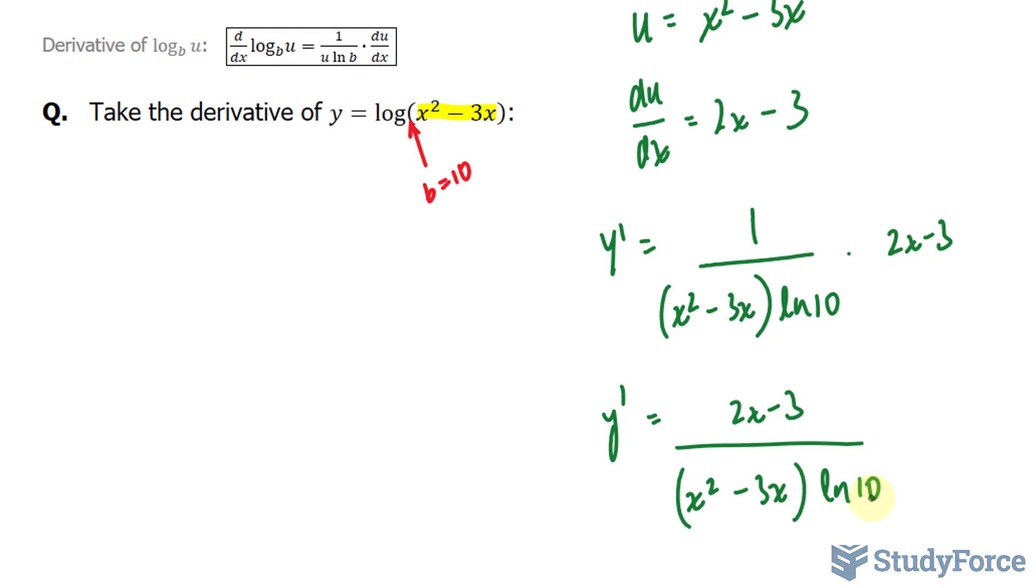Now, instead of writing ln 10 at the bottom, what I can do instead is write down log e. Because log e is equal to 1 over ln 10.